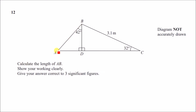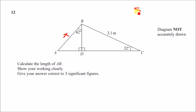Number 12: calculate the length AB, shown as a diagonal line on the diagram. Give your answer to three significant figures. There are two triangles here and they're both right-angled, which means we can use either Pythagoras's theorem or SOHCAHTOA. Since angles are involved, SOHCAHTOA is the most likely approach.